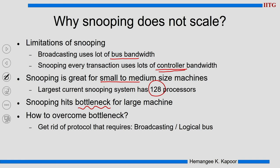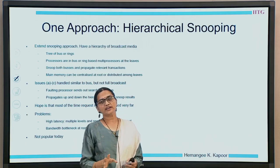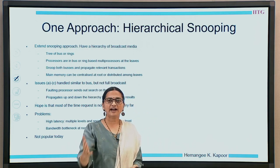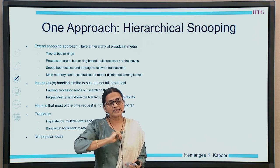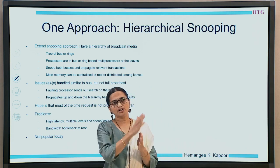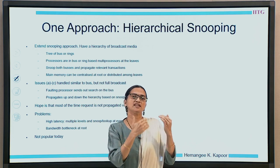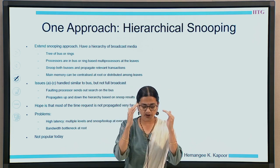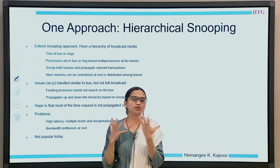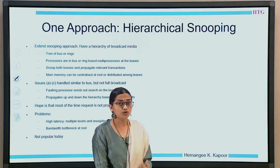How do I overcome this bottleneck? I can do this if I get away with the idea of broadcasting or a logical bus — I do not want to use broadcast, I do not want to assume a logical bus. How will you do this? You still want to reach 5000 of your friends but do not want to send a broadcast message. Can you establish connection with 10 of those, and those 10 establish connection with another 10 and so on? Can I have a hierarchy of this snooping idea?